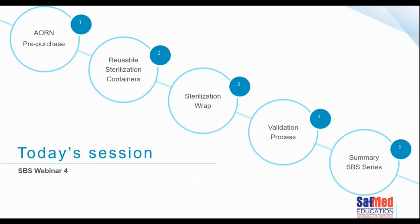In today's session, we're going to start by looking at a published paper from the AORN Journal about the pre-purchase evaluation — what do you need to evaluate before purchasing sterile barrier systems? Then we will look at important aspects to consider, as described in ISO 16775, when using reusable sterilization containers and sterilization wrap. We'll cover the validation process for both, learn about various wrapping techniques, and sum up what we've learned in this webinar series.